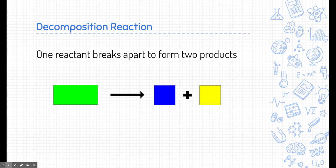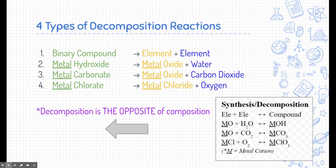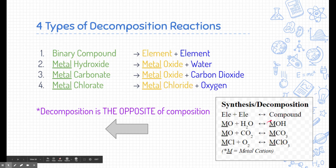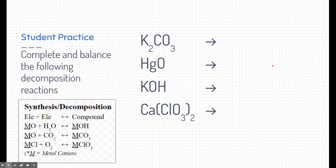Now let's talk about decomposition reactions. A decomposition reaction is just the opposite of a synthesis reaction. In a decomposition reaction, we start with one reactant and break it apart into multiple products — specifically two products for this class. Here are the four types of decomposition reactions. You might notice this list is just the opposite of the synthesis list. On the periodic table chart, the arrows go both ways: synthesis reactions go to the right, and decomposition reactions start from the right and go to the left. Pause the video now and see if you can determine the balanced chemical equation for each decomposition reaction.